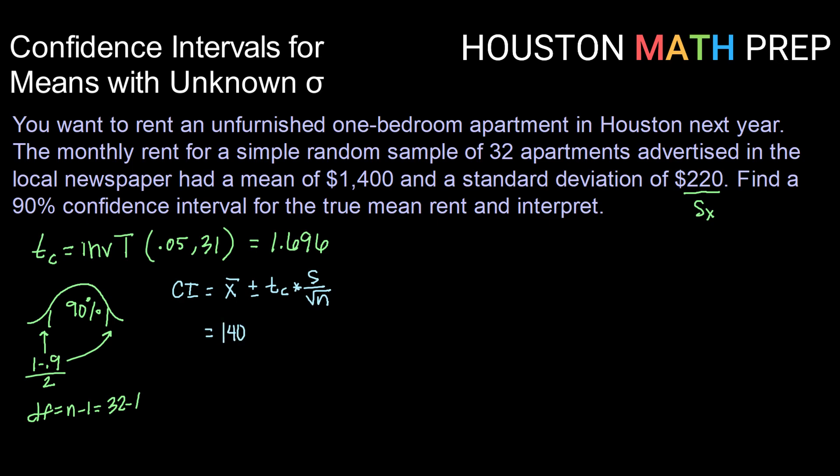In this case, that will be 1,400 plus or minus 1.696 times our standard deviation of 220 divided by the square root of 32. Now, whether you calculate that by hand or you use the T interval, either way, you should get an interval of $1,334.10 up to $1,465.90.